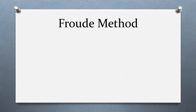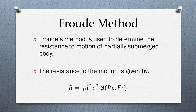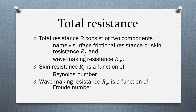We are going to see Froude's method, which is used to determine the resistance to motion of the partially submerged body. Resistance to motion is given by ρL²V² and is a function of Reynolds number and Froude's number. The total resistance has two components: the surface frictional resistance (skin resistance) denoted by Rf, and the wave making resistance denoted by Rw. The skin friction Rf is a function of Reynolds number, and the wave making resistance is a function of Froude's number.